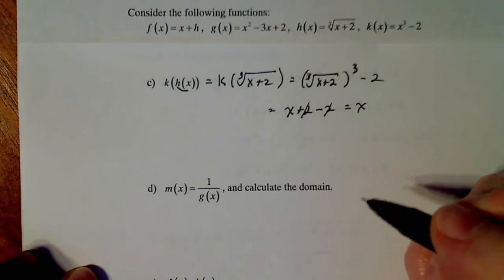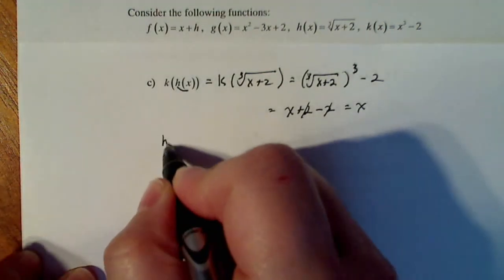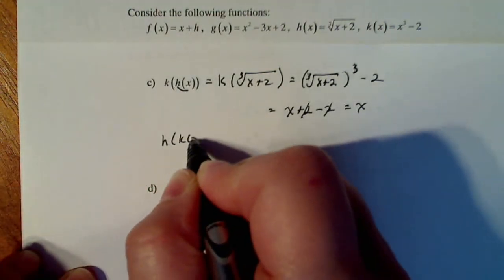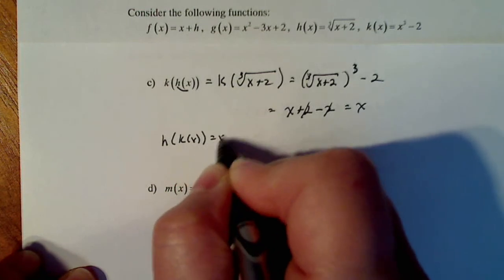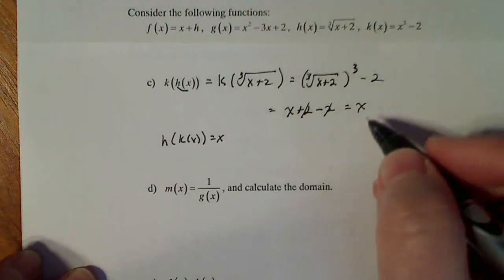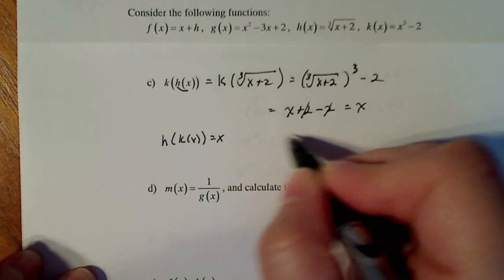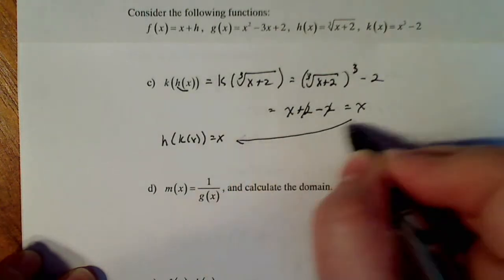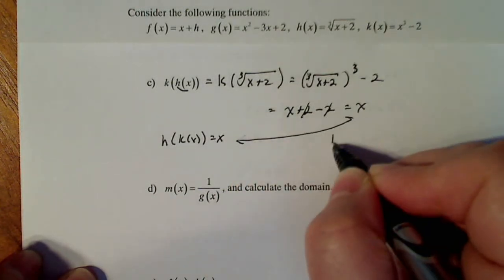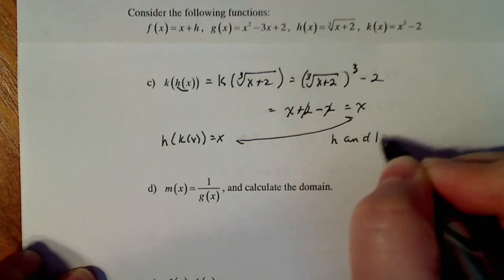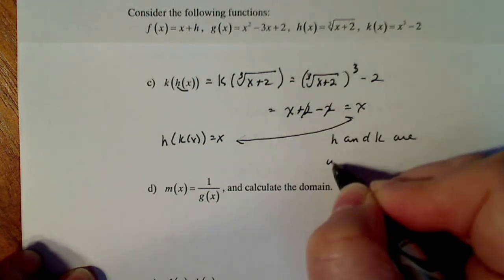Remember from before, H of K of X was also X. Now K of H of X is X as well. Because this is true for both directions of the composition, H and K are inverse functions.